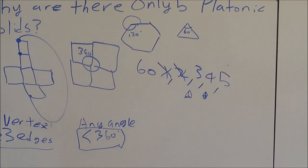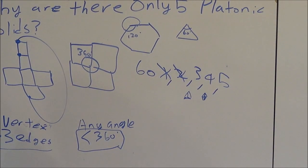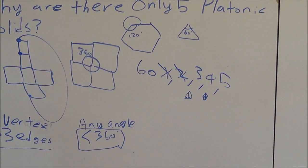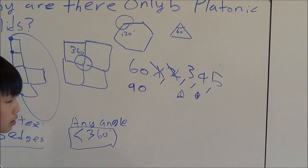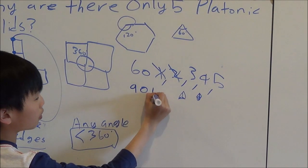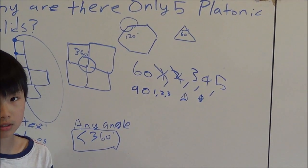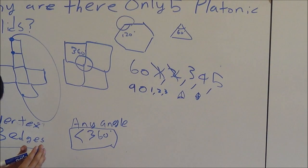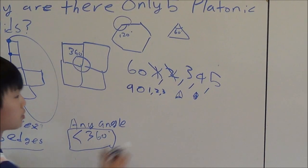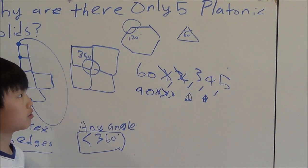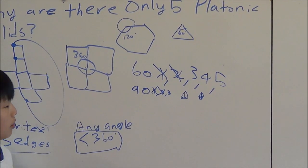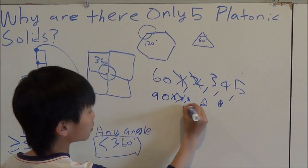But, triangles are not the only shape that work. Squares and pentagons do. Unfortunately, the number 90 only can be multiplied by 1, 2, or 3 before it reaches 360. Which means, since 1 and 2 are off limits, the only shape that a square can make into a platonic solid is the cube.